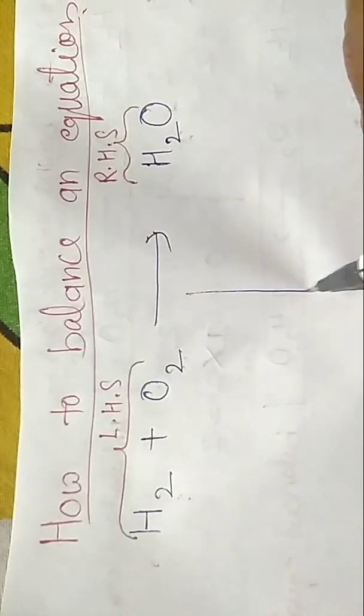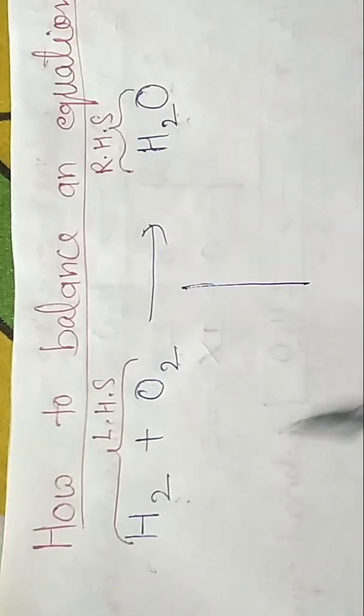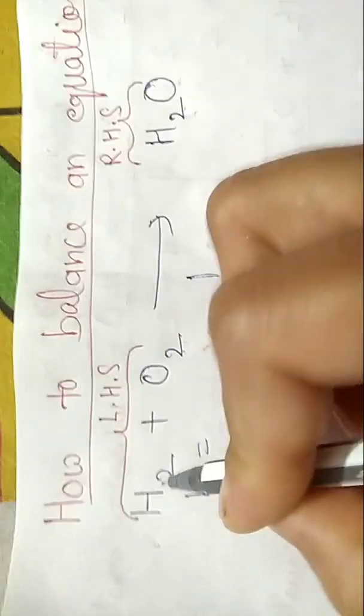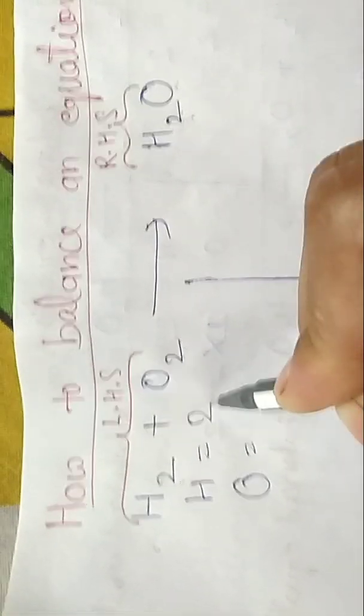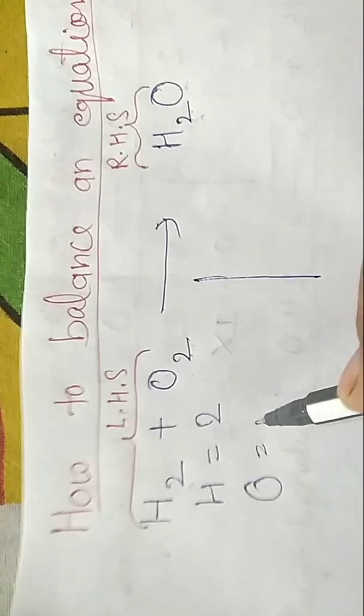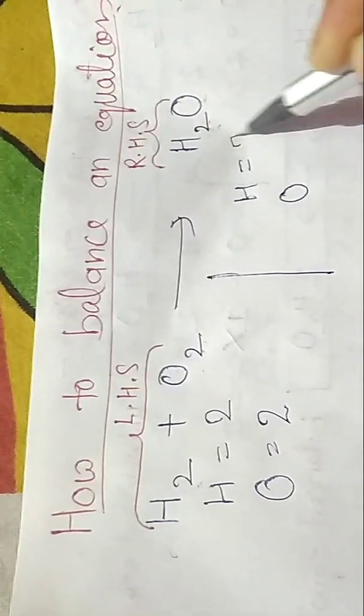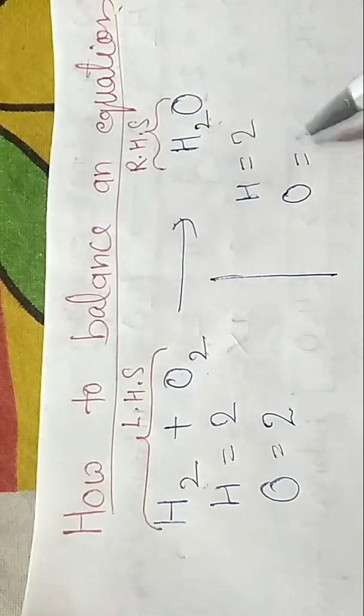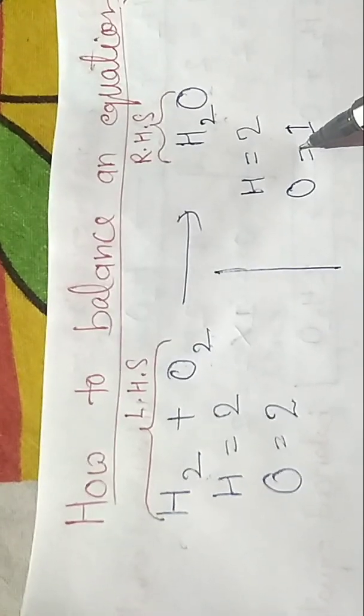To balance it, first we have to draw this line to make two parts. After that we will write the atoms: hydrogen atom here and oxygen atom. Write the number of how many they are. Hydrogen atom is two and oxygen atoms are two here. Likewise, H and O: H are two and O is only one, so this is not balanced.